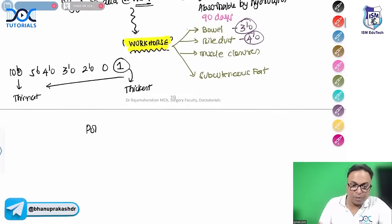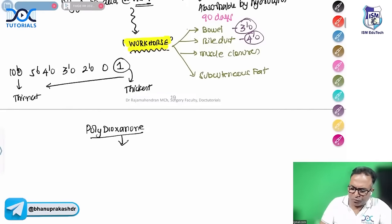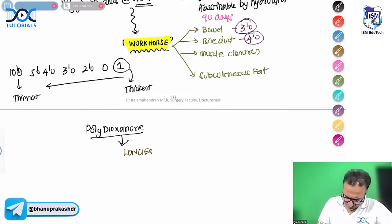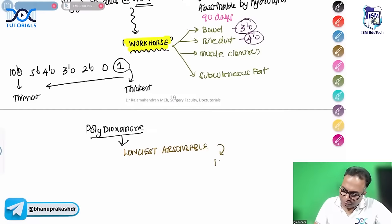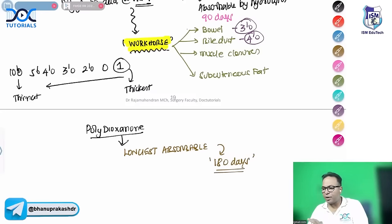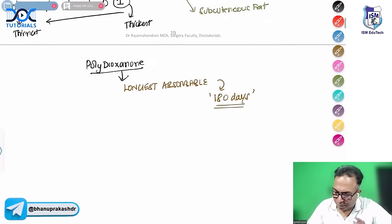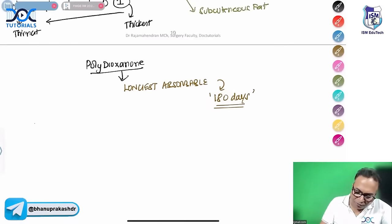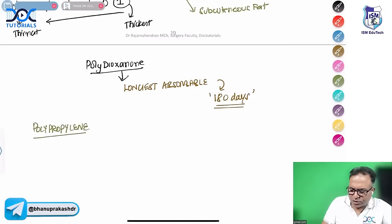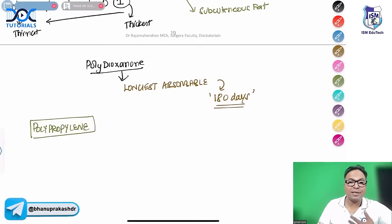The most important suture material is polydioxanone — a highly expected MCQ for NAPG and FMG exams. It is the longest absorbable suture material, absorbed in 180 days. Polypropylene (Prolene) is blue in color and non-absorbable, with approximately 8 MCQs expected from it. It has a property called 'memory' — a coiling property — which is a bad property as it loosens knots.